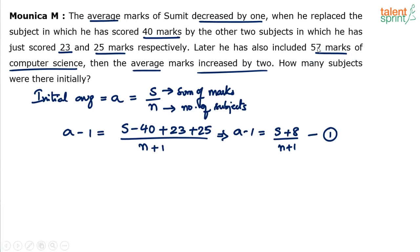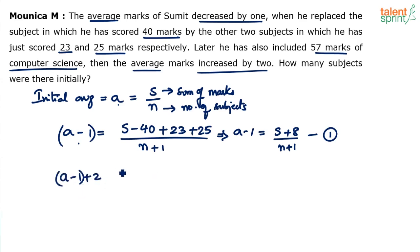Later, he included computer science where he scored 57 marks, and the average increased by 2. The initial average was A, then it became A minus 1, and now it increased by 2. So the new average is A minus 1 plus 2, which equals A plus 1.